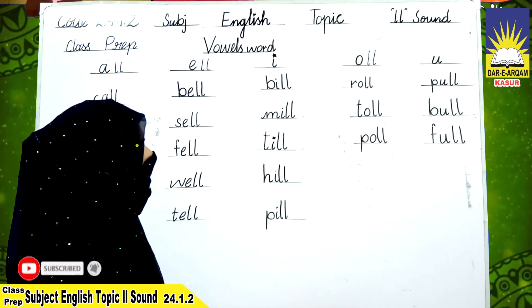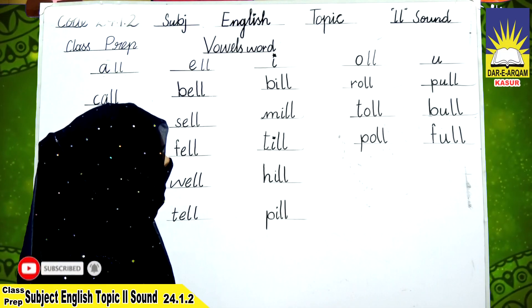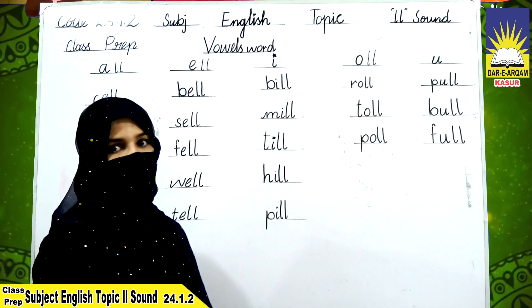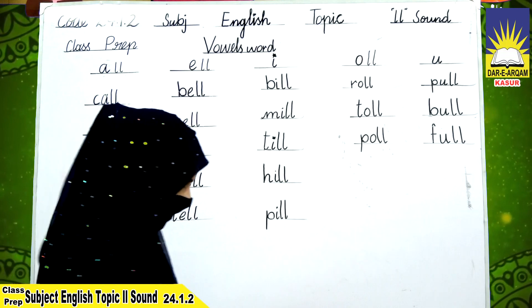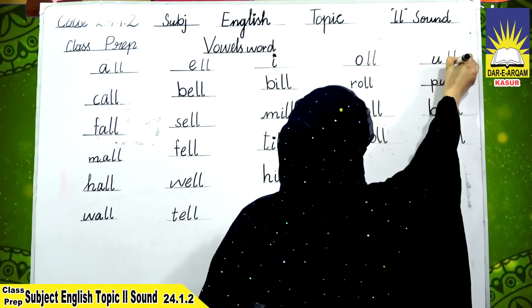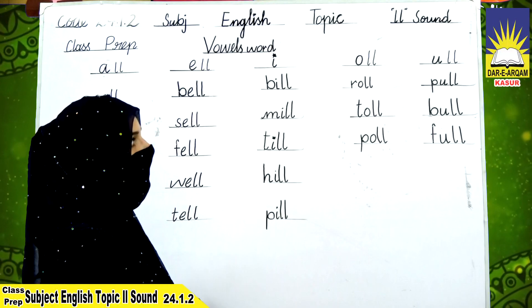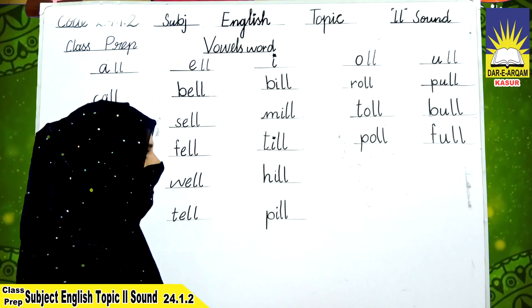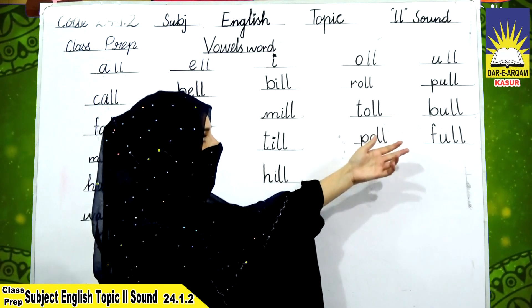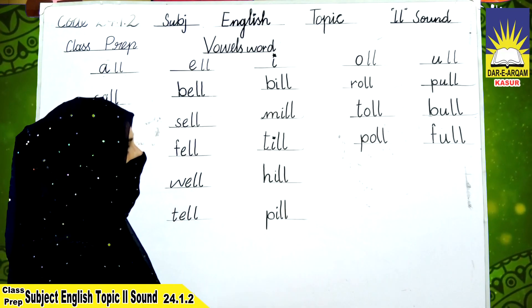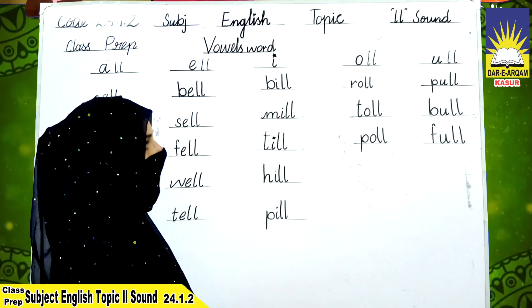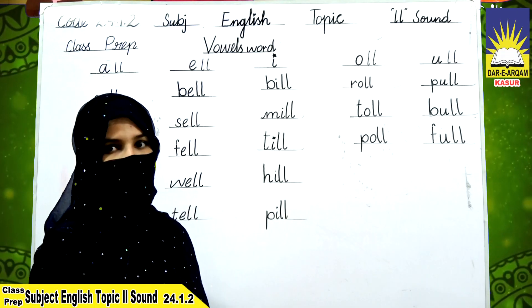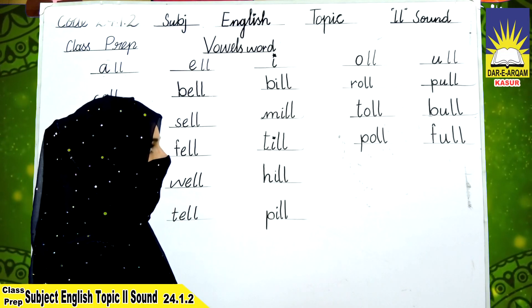Similarly, when the U letter attaches with the LL sound: U-L-L. Now we will repeat: P-U-L-L: pull. P, all — poll. B, all — ball. F, all — fall.